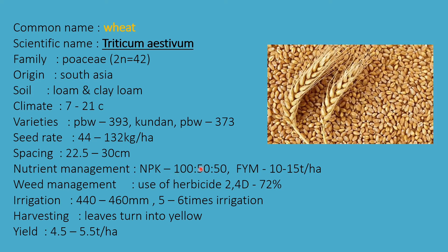Phosphorus and potassium are applied in basal doses, and the 100 kg of nitrogen is applied in 2 to 3 split doses. FYM is 10 to 15 tons per hectare. For weed management, use herbicide 2,4-D 72%. Total irrigation required is 440 to 460 mm, given 5 to 6 times. Harvesting is when leaves turn yellow, and the yield is 4.5 to 5.5 tons per hectare.